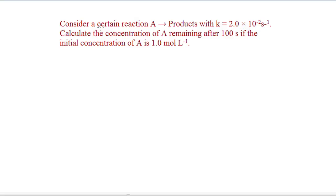The problem says consider a certain reaction, a chemical reaction is given, with a rate constant 2.0 × 10^-2 per second. The rate constant for the chemical reaction is given here, this is the k value.